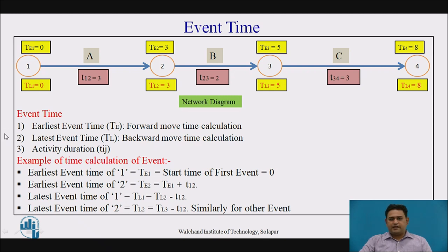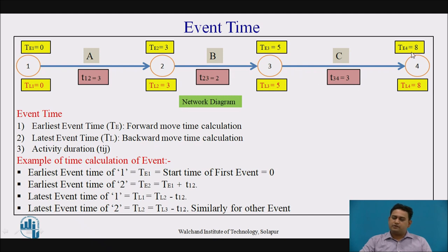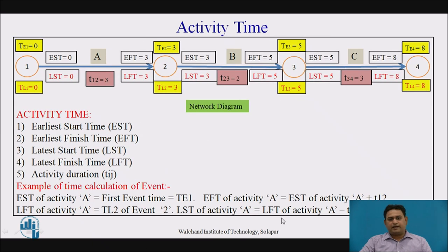TE1 is equal to 0 because it is the starting event. TE2 is 3, because 0 plus 3 equals 3. Similarly for forward events: 3 plus 2 is 5, and 5 plus 3 is 8. We carry the earliest event time of 8 to the latest event time, so 8 minus 3 equals 5. Now let us see the activity time.